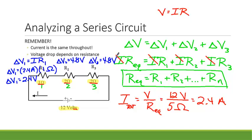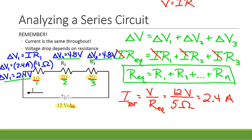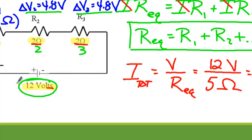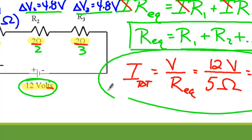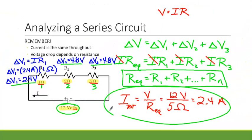If we wanted to know the voltage drop across each resistor, delta V1 equals I times R1, so 2.4 amps times 1 ohm equals 2.4 volts. Resistor 2 gives 4.8 volts and resistor 3 also gives 4.8 volts. Adding 2.4 plus 4.8 plus 4.8 gives 12 volts, confirming our answer matches the supply voltage. The most important thing to remember about a series circuit is finding the current first, since the current is the same throughout, and there is only one path for the current to flow.